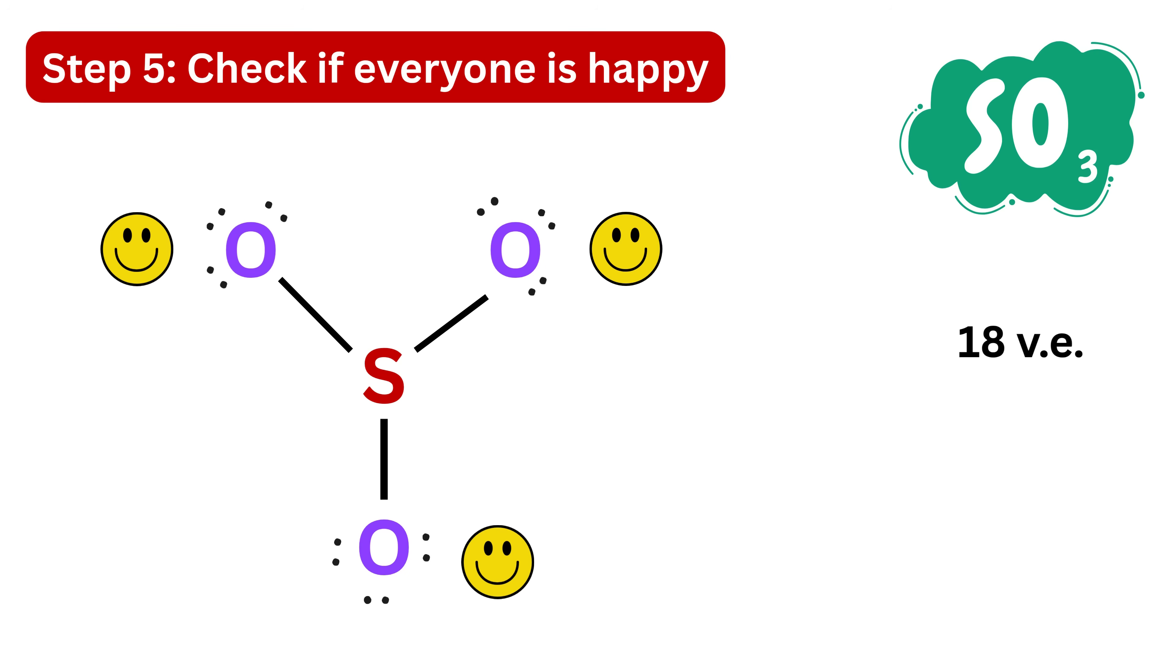Now check if everyone is happy. The oxygens are fine—each has eight electrons: two from the bond and six as three lone pairs. But sulfur has only six electrons, which are the six shared electrons from its three single bonds. Oh no, this is not a full octet yet! We can't just add more electrons out of nowhere, so what can we do? We can convert one of the lone pairs from oxygen into a shared pair, which means a new bond with sulfur. That means one of the oxygens will now form a double bond with sulfur. Now sulfur has eight electrons: four from these two single bonds plus four from the double bond, making eight in total. Awesome! Every atom now follows the octet rule. So the final Lewis diagram for sulfur trioxide is this.